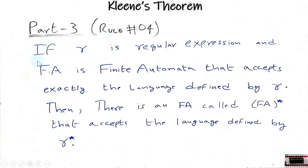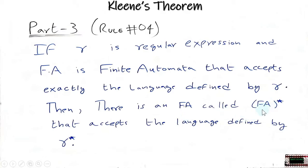Part 3, rule 4 says that if r is a regular expression and FA is a finite automata that accepts exactly the language defined by r, then there is an FA called FA-star that accepts the language defined by r-star. This means if a finite automata exists which accepts the language defined by r, there is also a finite automata that is the Kleene closure of that FA. This asterisk symbol is called Kleene star in automata.